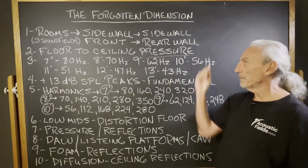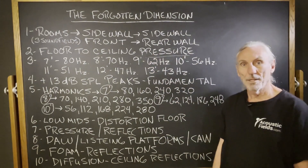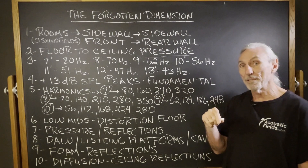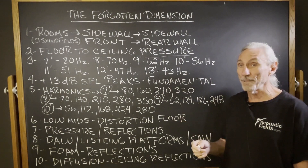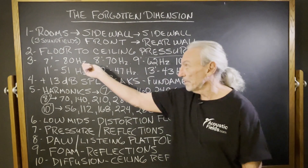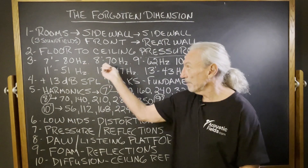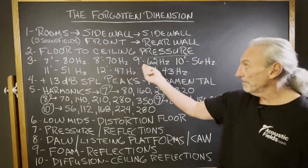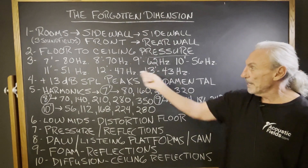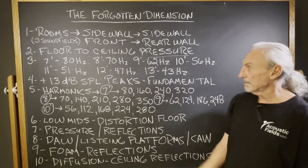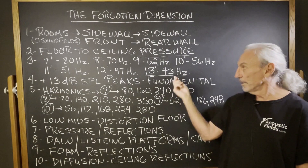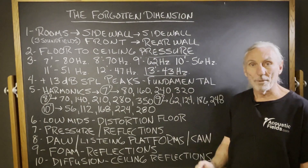Floor to ceiling pressure is a big problem. Why is that? Because the floor to ceiling dimension is usually the smallest. So if it's going to be small — 7 foot, we're going to have an 80 cycle problem; 8 foot, 70; 9 foot, 62. You can see the trend in the heights. It's really kind of ironic that the higher you go, the lower the problem.